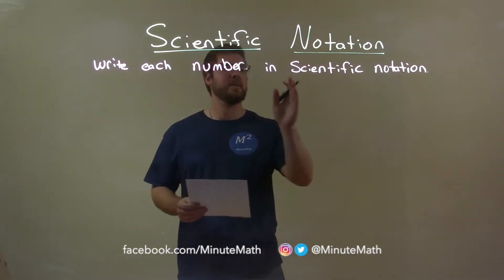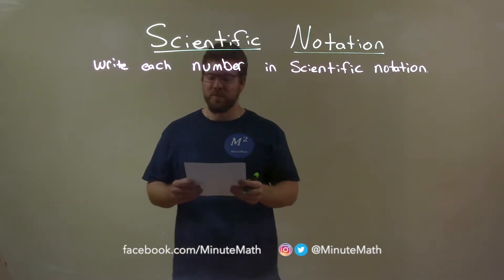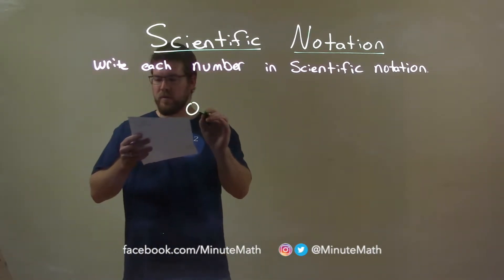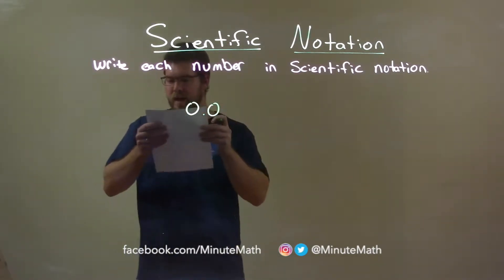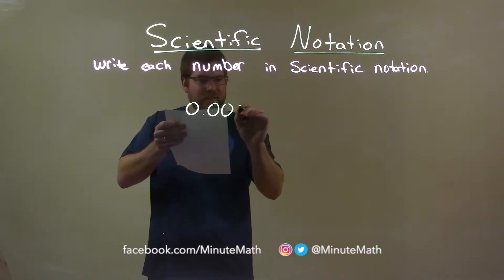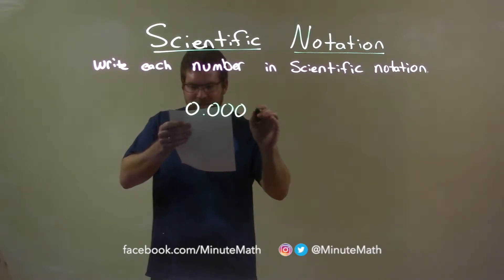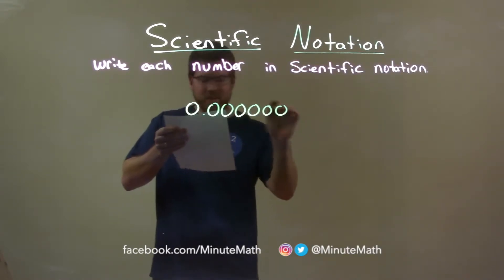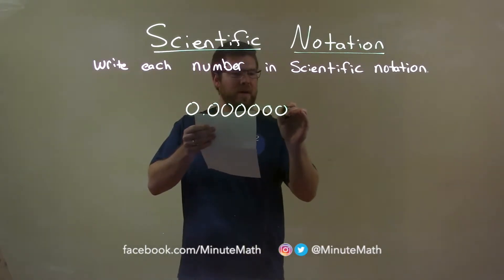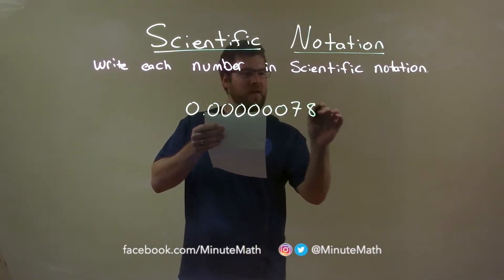We're going to write each number in scientific notation. So if I was given this number, 0.00000786.